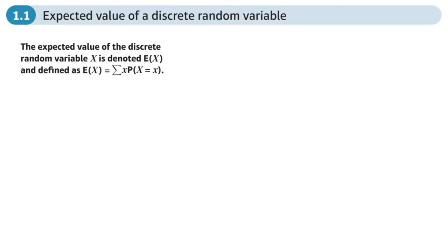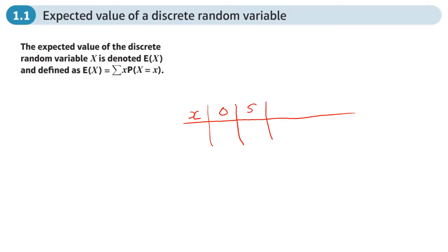You can think of this chapter as to do with dice. Imagine you've got a dice with particular numbers that can come up — let's say the values of x are zero, five, seven, ten, and eleven. In the bottom row of our table we're going to put down the probability of each one of those values coming up.